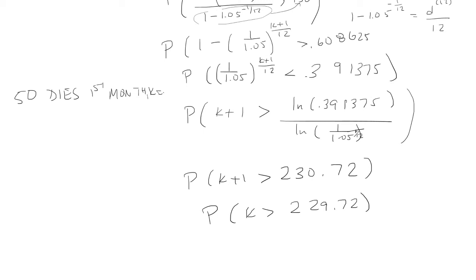If age 50 dies in the second month K is 1. And because it's discrete I don't care if it's 229.5, 229, 229.3. It doesn't matter. It's going to go to the end of the month. So that means that the person will have to die during the 230th month.